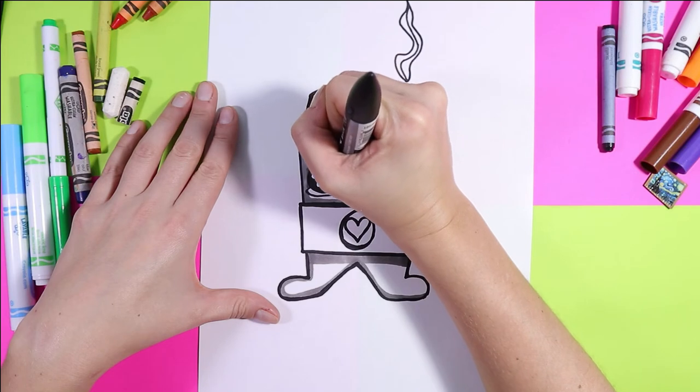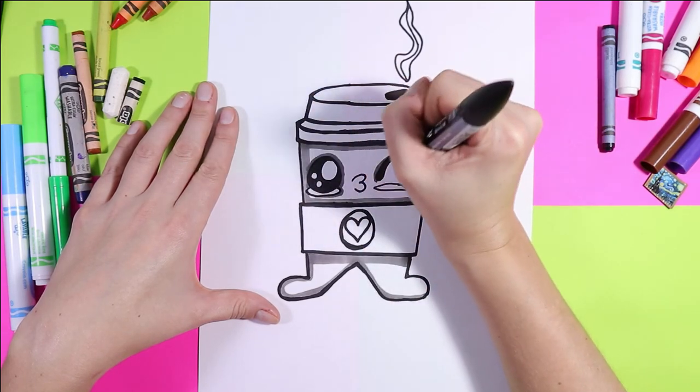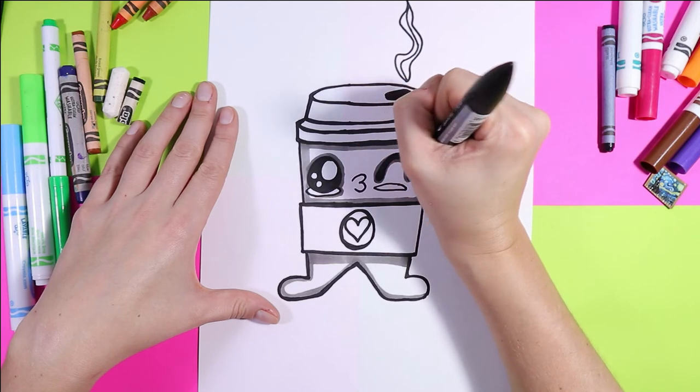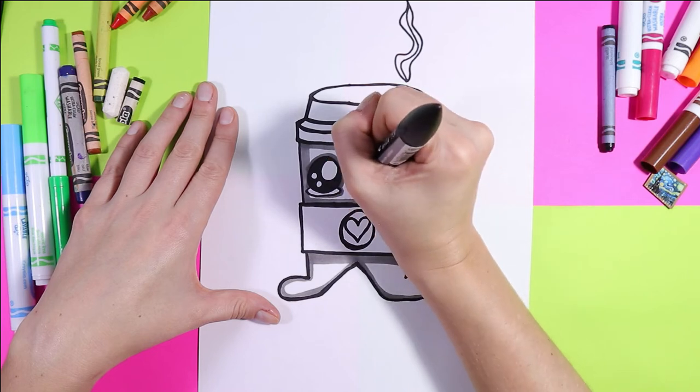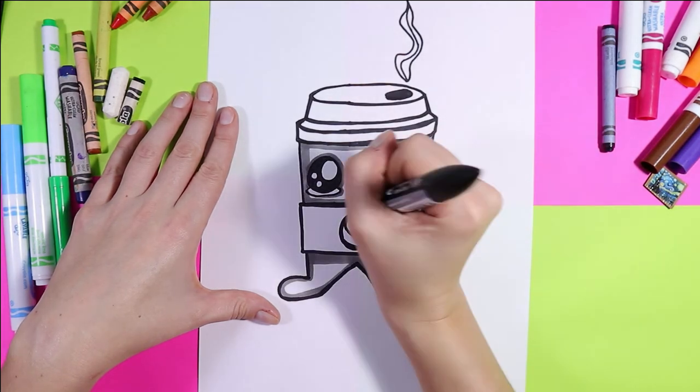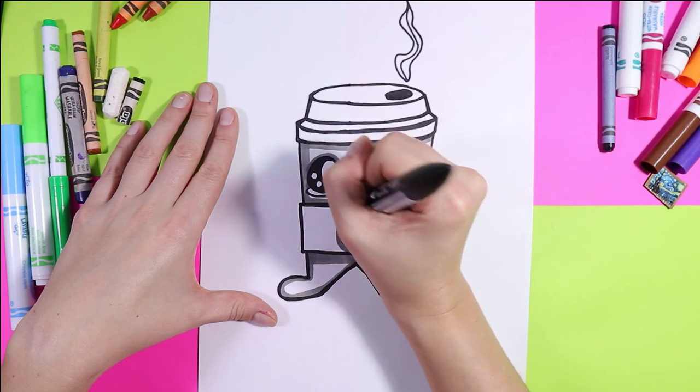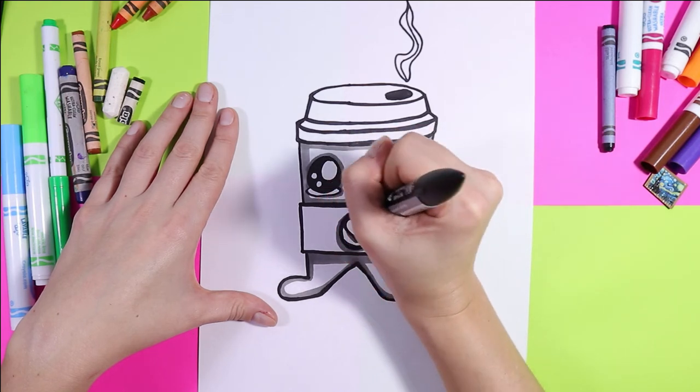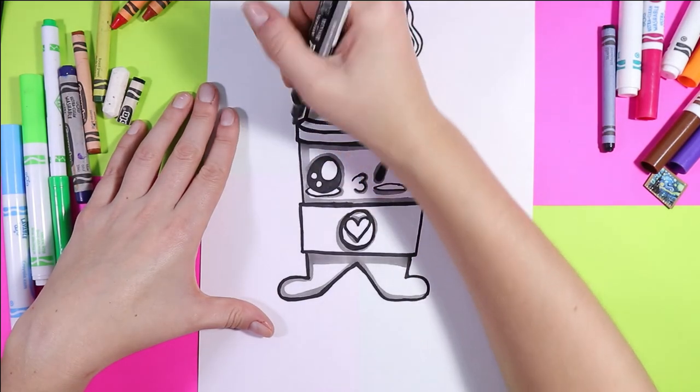Okay, around the eyes with your marker to add some shading around the cheeks and the mouth and on the cardboard sleeve. You can also add some shading if you really want. It's up to you. Just makes it stand out a little bit more. Okay.